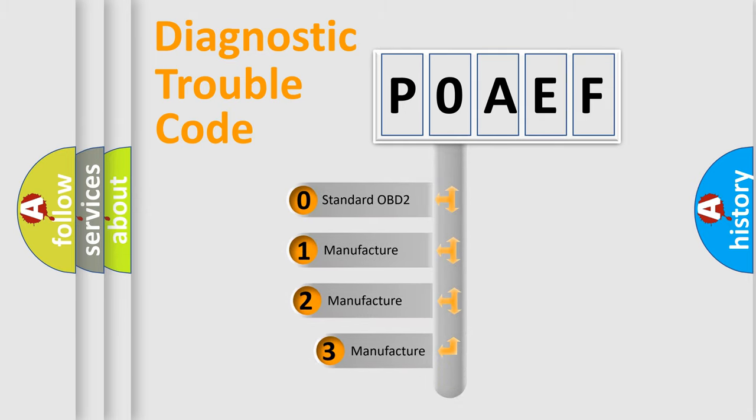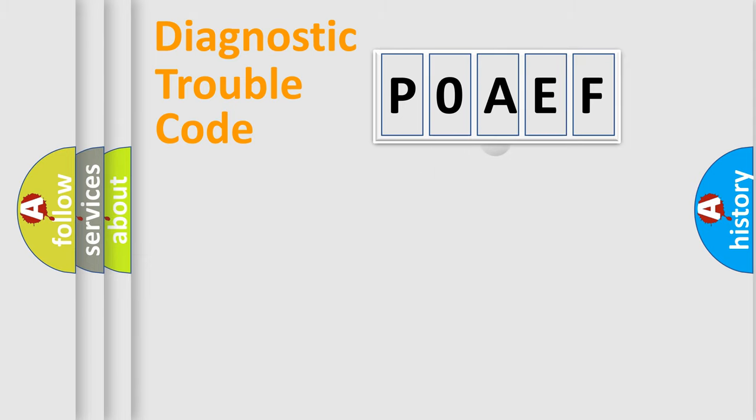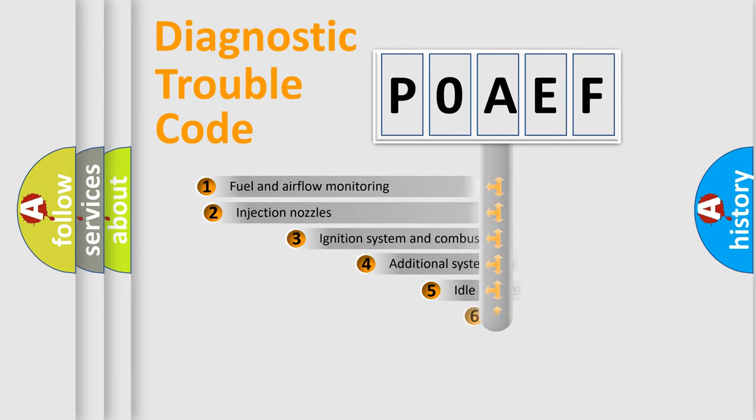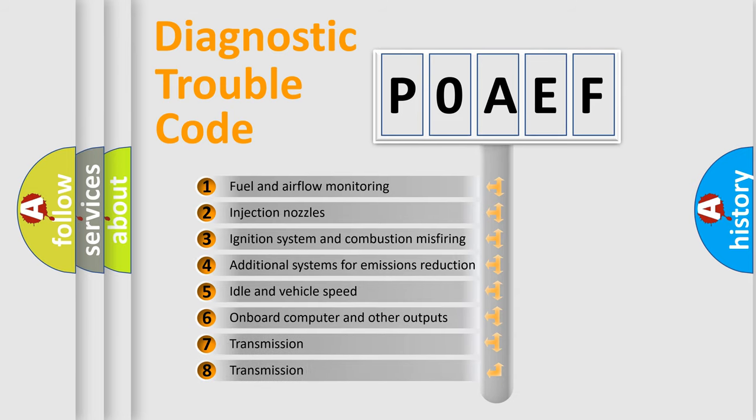If the second character is expressed as zero, it is a standardized error. In the case of numbers 1, 2, or 3, it is a manufacturer-specific expression of the car specific error. The third character specifies a subset of errors.